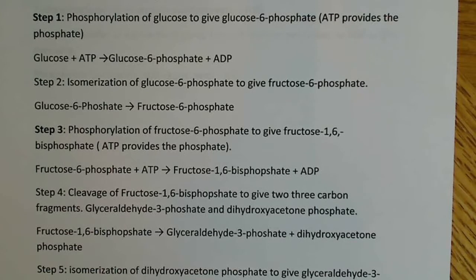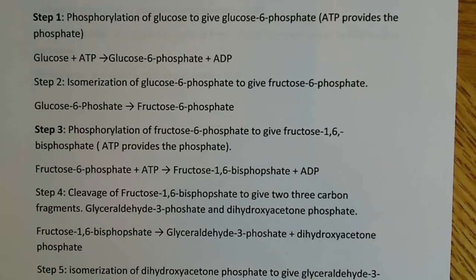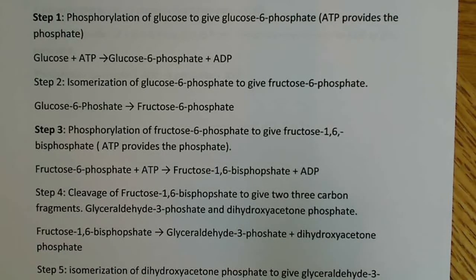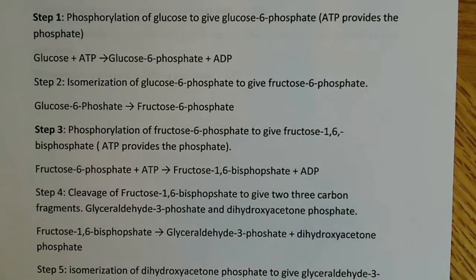Step one is a phosphorylation of glucose to give glucose-6-phosphate. ATP provides the phosphate — this is one of the ATP-requiring reactions, coupling ATP hydrolysis to phosphorylate glucose, to provide the energy necessary to do so. And step two is an isomerization of glucose-6-phosphate to give fructose-6-phosphate. We're just creating an isomer — the same number of atoms, just a different arrangement — so glucose-6-phosphate makes fructose-6-phosphate.